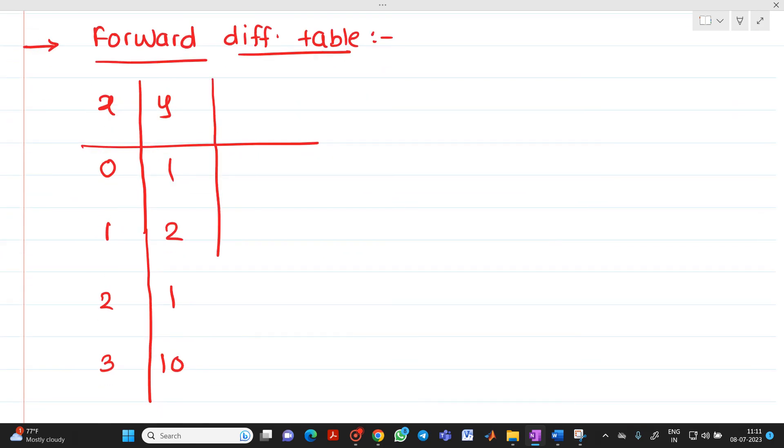So first thing is what we have to find out here. Del of y. So what is del of y0? 2 minus 1, it will be equal to 1. Del of y1: 1 minus 2, it will be equal to minus 1. Del of y2 is 10 minus 1, it will be equal to 9.